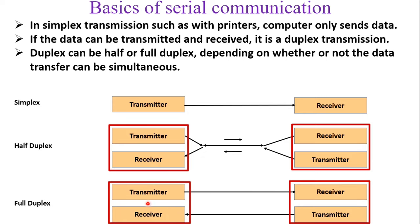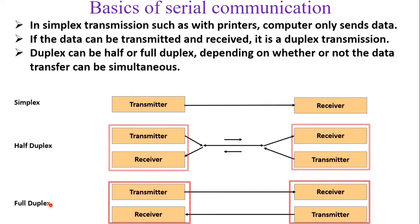In full-duplex communication, two separate communication lines are dedicated — one for each direction. The transmitter on one side can send data to the receiver while the transmitter on the other side simultaneously sends data back. A mobile phone call is an example of full-duplex communication.